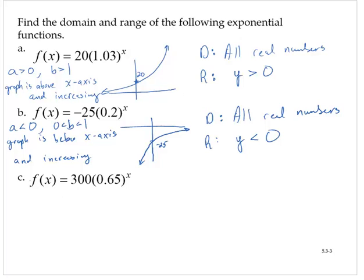And c, f of x is equal to 300 times 0.65 to the x. Because a is greater than 0 and b is between 0 and 1. So therefore, the graph is above the x-axis and decreasing.